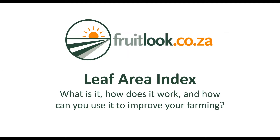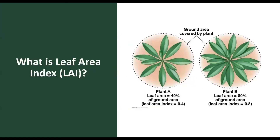Today's focus is on the growth parameter leaf area index. LAI is an indicator of the amount of leaf surface — how densely a crop grows or how much foliage there is on plants. The higher the LAI, the more ground area is covered by the plant, while a lower LAI means that less ground is covered. Its unit of measure is square meter single-sided leaf area per square meter soil area.